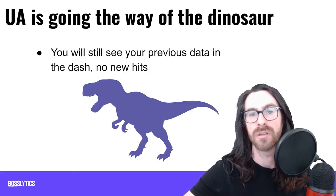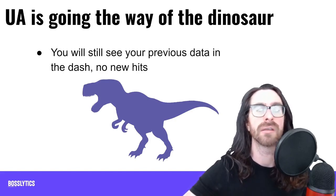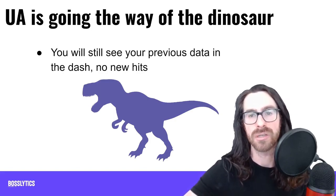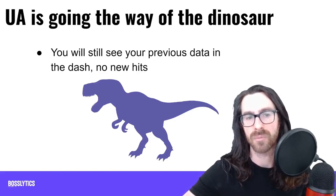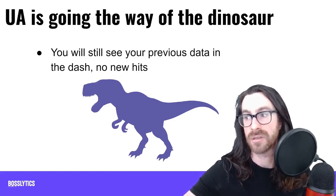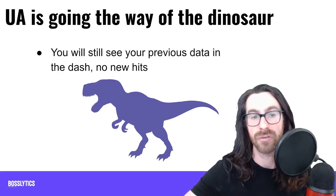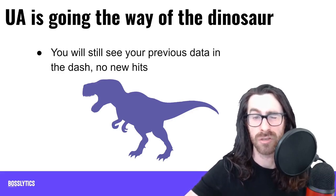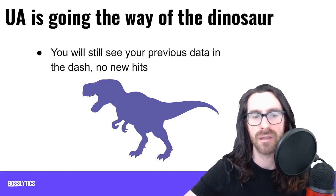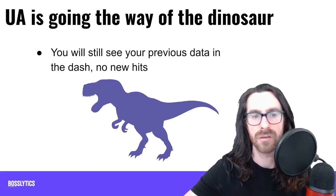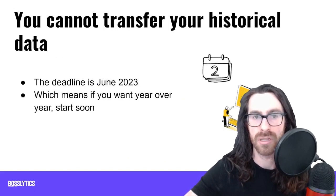You may have heard Universal Analytics is going the way of the dinosaur. You will still see your previous data in the dashboard, but there's not going to be any new hits after sometime in June 2023. You can still use it as an index and a historical record, but it's going to be no longer registering new hits.